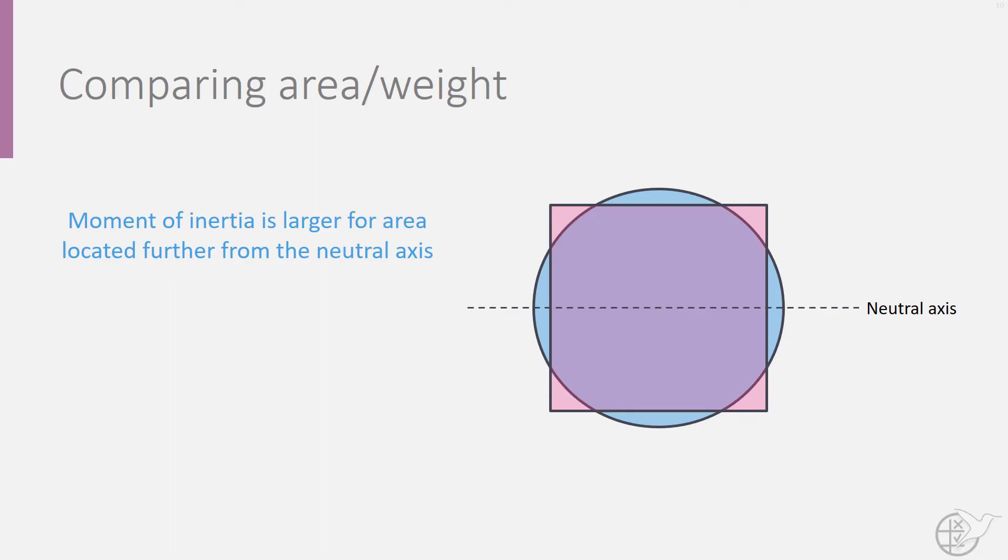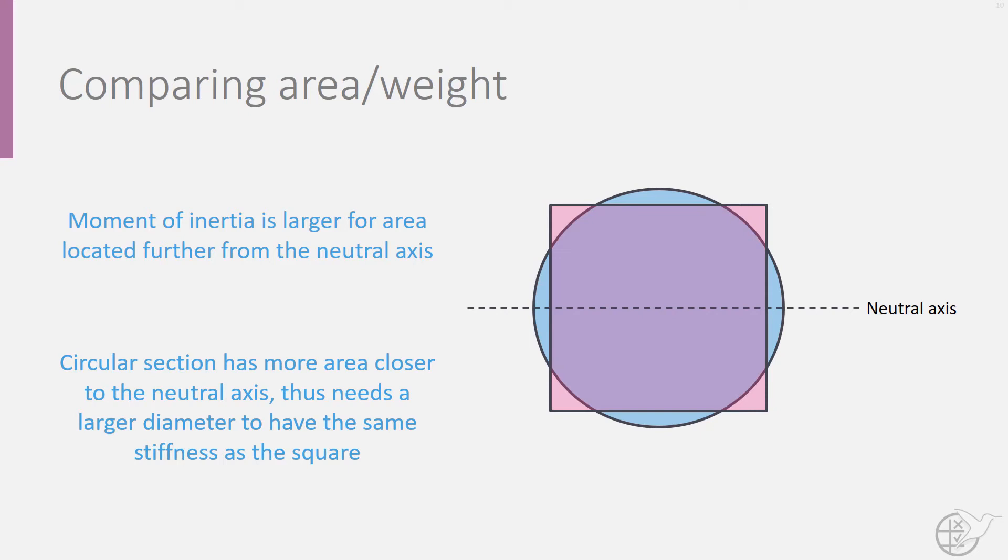we see that most of the area is concentrated close to its neutral axis, and thus it is less efficient at resisting bending for the given neutral axis.